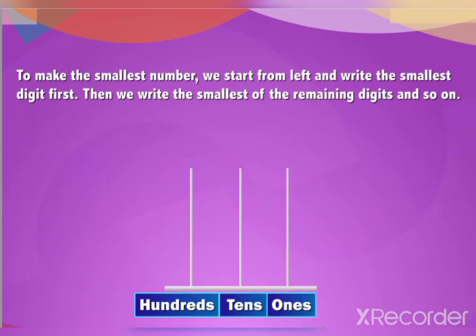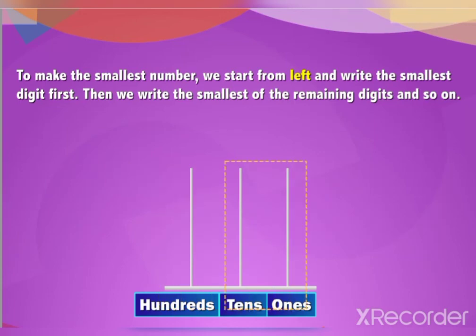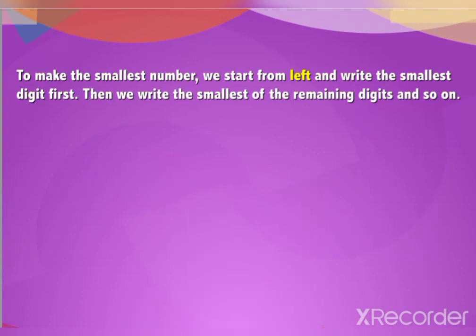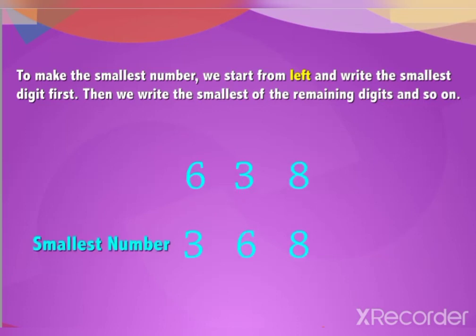Similarly, to make the smallest number, we start from the left and write the smallest digit first, then the smallest of the remaining digits, and so on. For example, the smallest number made using the digits 6, 3, and 8 will be 368.